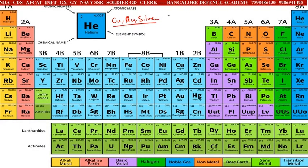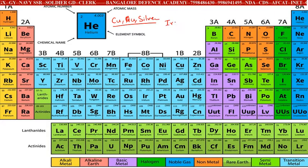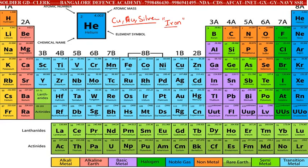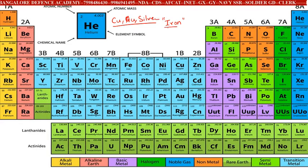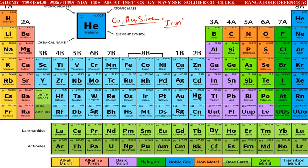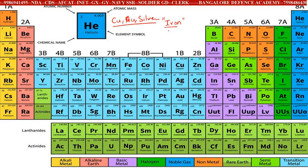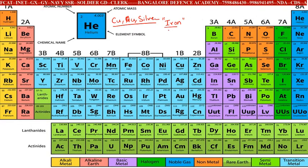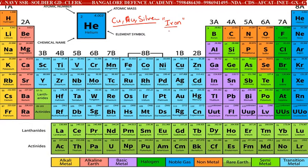Slowly after the Industrial Revolution, when man mastered the technology of manufacturing iron, we got to know that there are more than hundreds of elements on this planet. The scientists were on a hunt to figure out how to arrange all these elements in a particular way so that we can understand and study their properties.